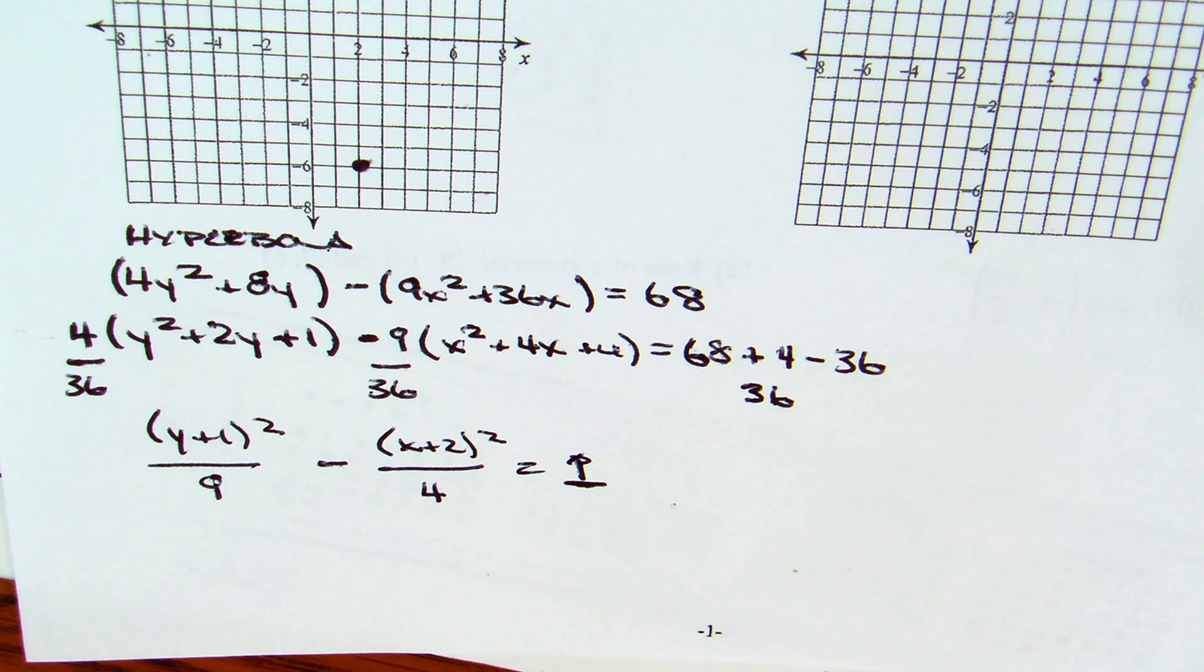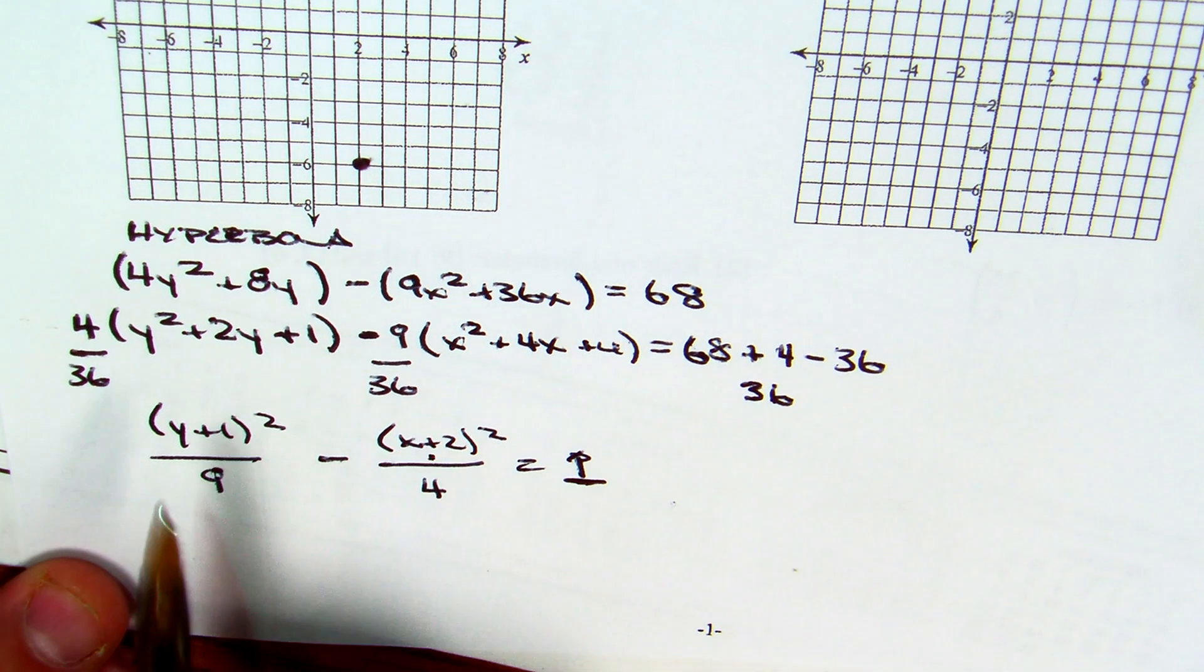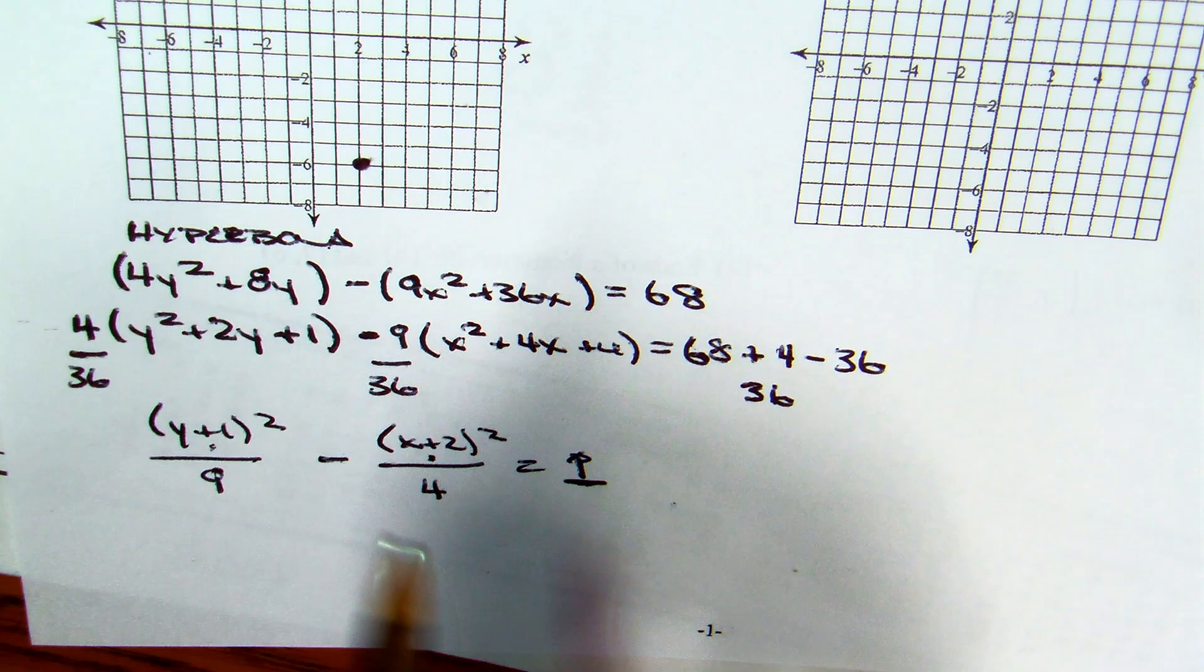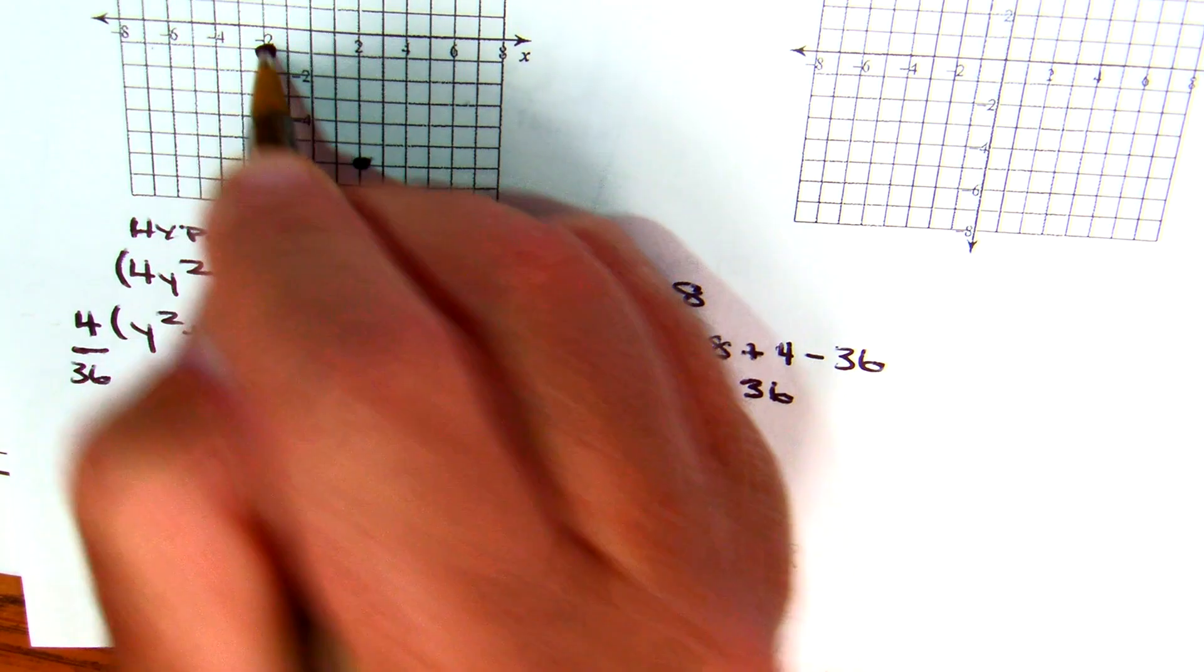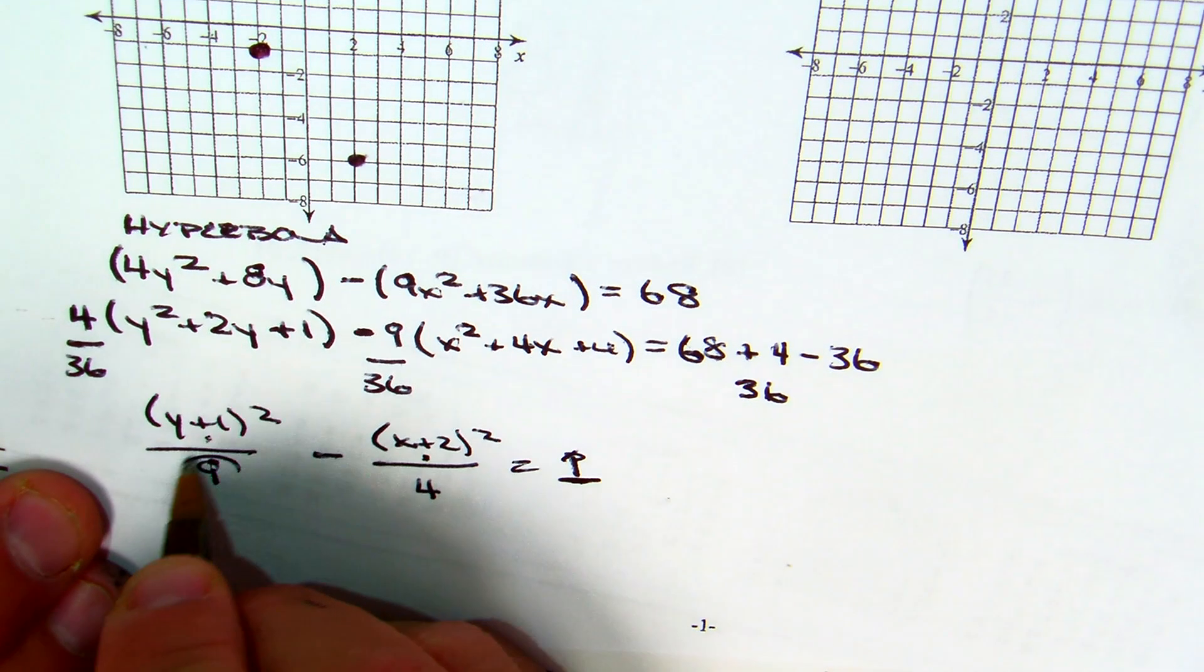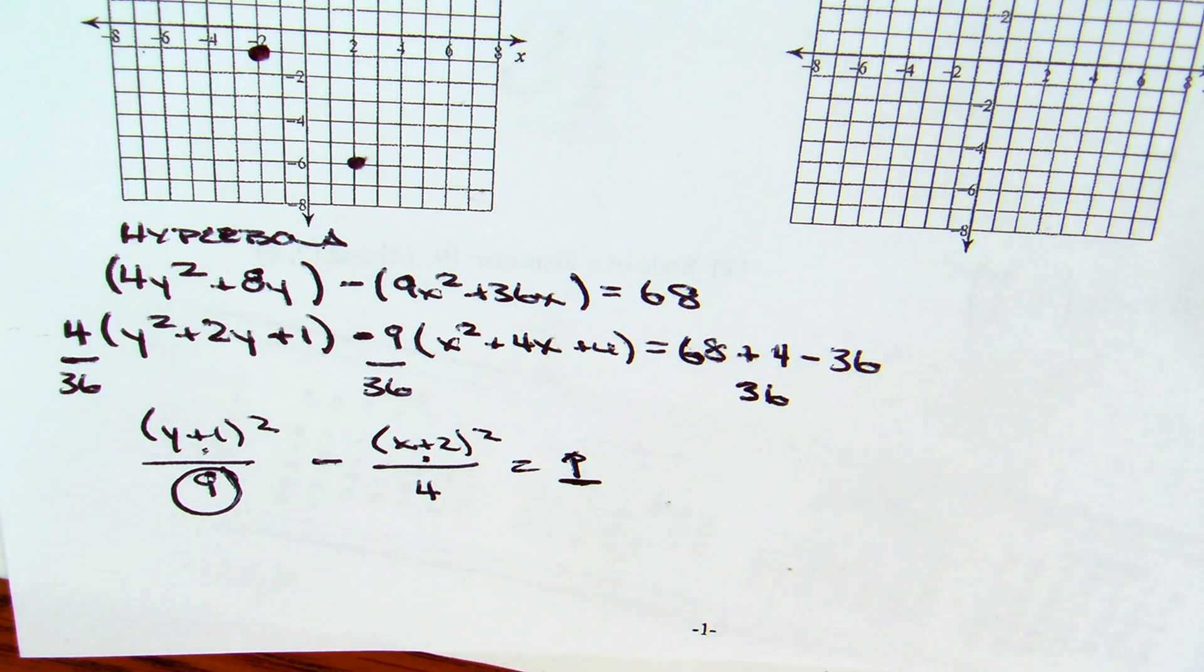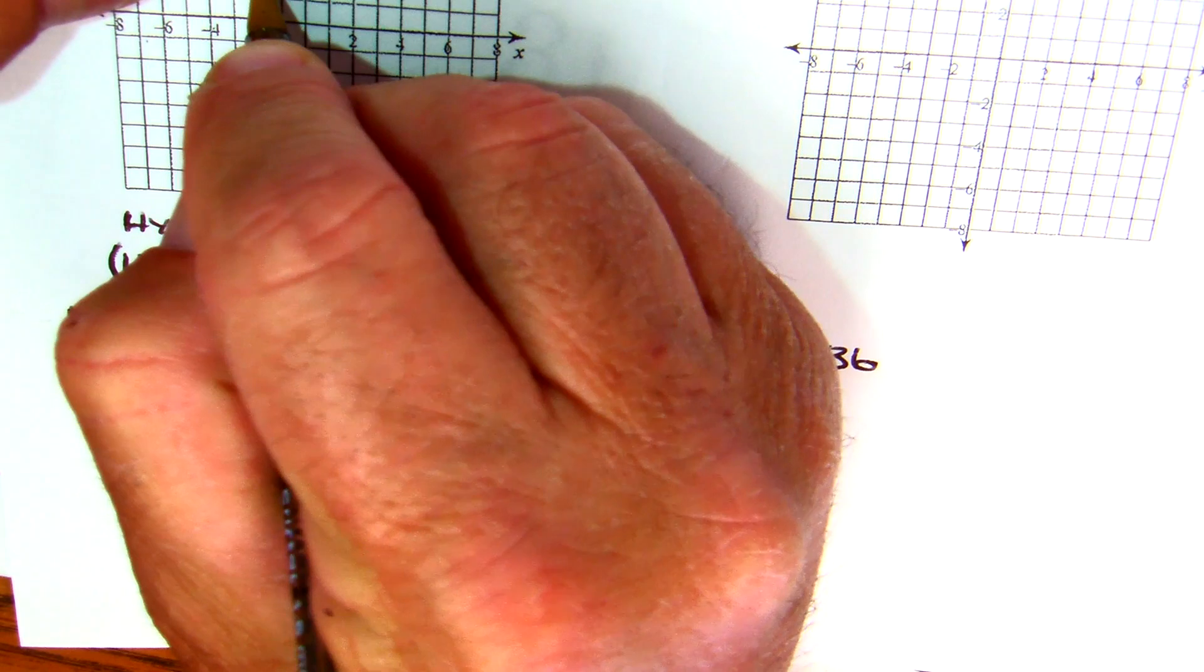Even though the x comes second, remember the vertex that comes first. So, what's the opposite of positive 2? Negative 2. Opposite of positive 1? Negative 1. So, my center, for lack of a better word, is negative 2, negative 1. The y comes first. We have a denominator of 9. What's the square root of 9? 3. So, I'm going up 3 and down 3.